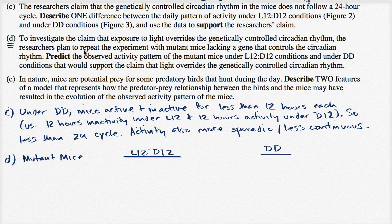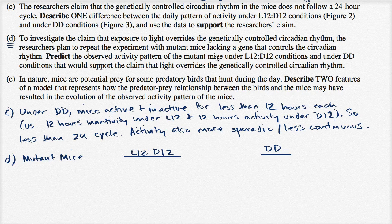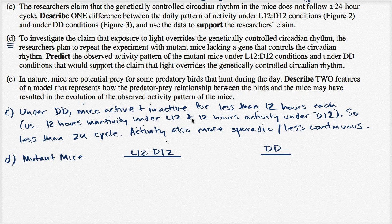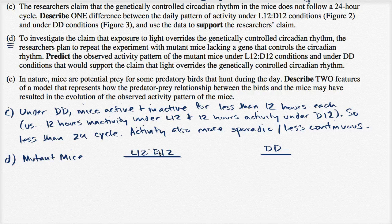What would I expect? So they predict the observed activity pattern. So the mutant mice, they don't have, they have some, they're lacking genes that control circadian rhythm, but under L12D12, they don't need the genetic circadian patterns, genetically influenced ones, because they get the ones from their environment, the light and the darkness. They didn't get, this isn't a gene that somehow makes them not sensitive to light. So I would assume under the L12D12, they would behave, they would have activity pattern similar to non-mutant mice.